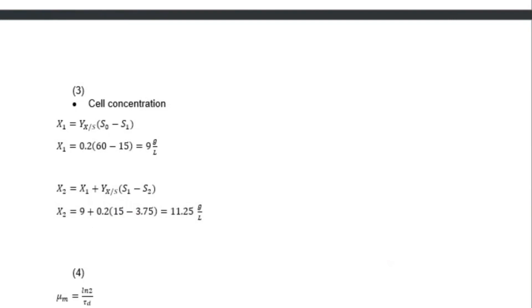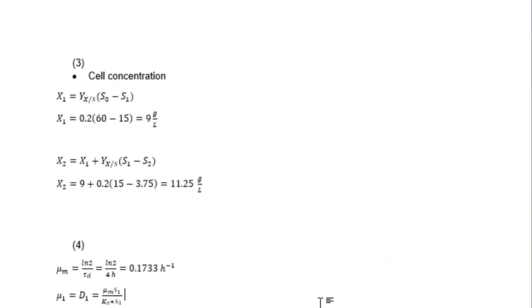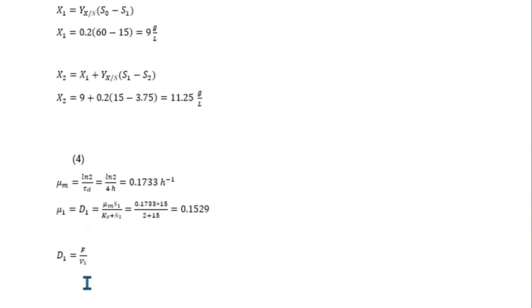For the maximum growth rate µM, we calculate it as ln(2) divided by the doubling time TD. That gives ln(2) / 4 hours = 0.1733 per hour. The specific growth rate at stage one, µ1, equals the dilution factor D1, and can also be written as µM × S1 / (Ks + S1). Substituting the known values gives µ1 = D1 = 0.1529 per hour.